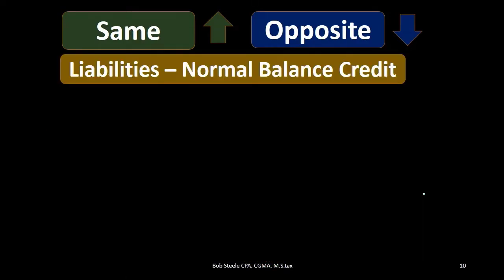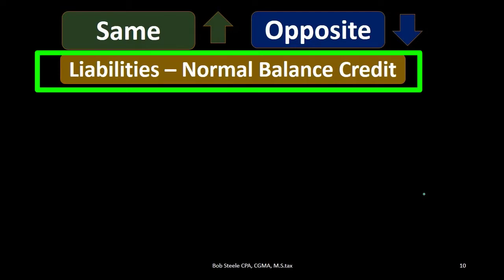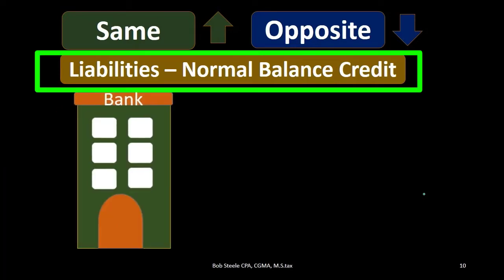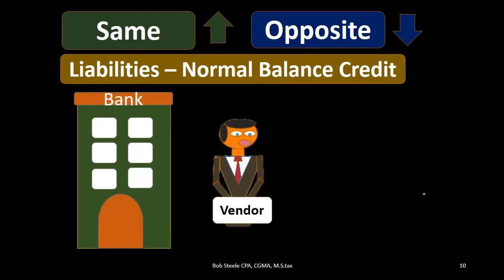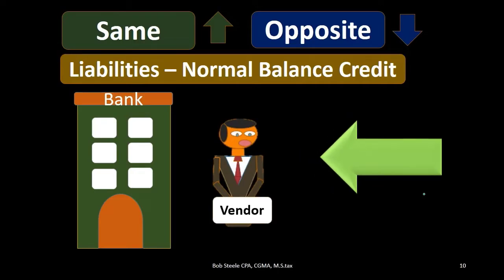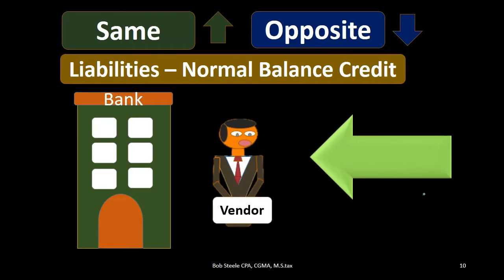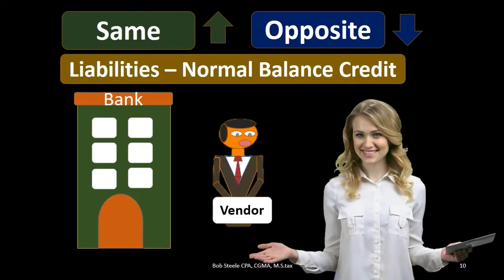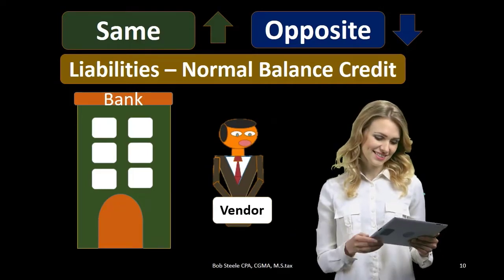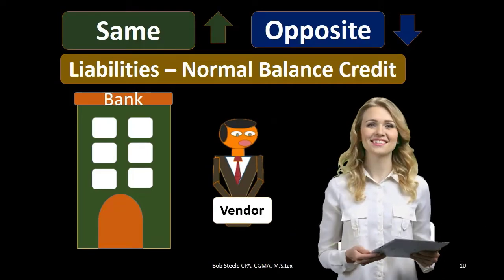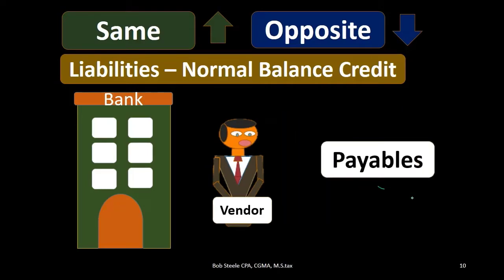That's going to be the case for all liabilities — like a bank loan or vendor payables. Later we'll have various payables, and anything with 'payable' on it will typically be a liability-type account having a normal credit balance.